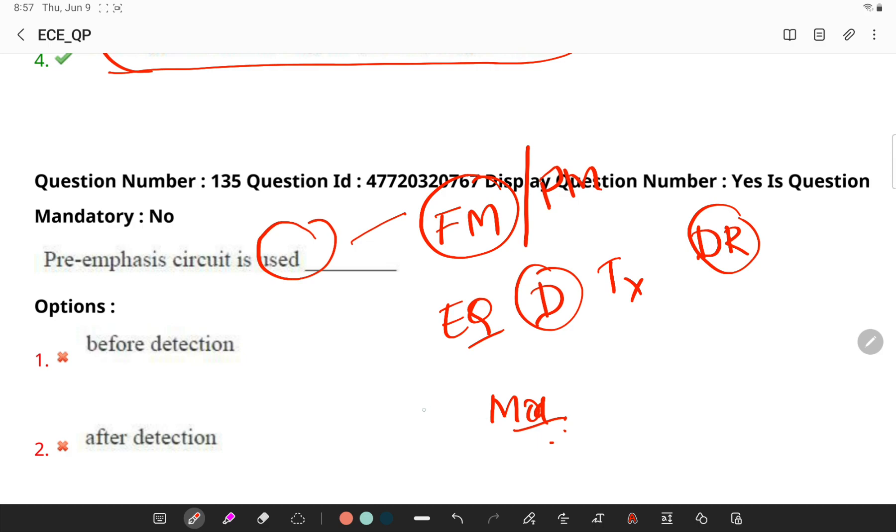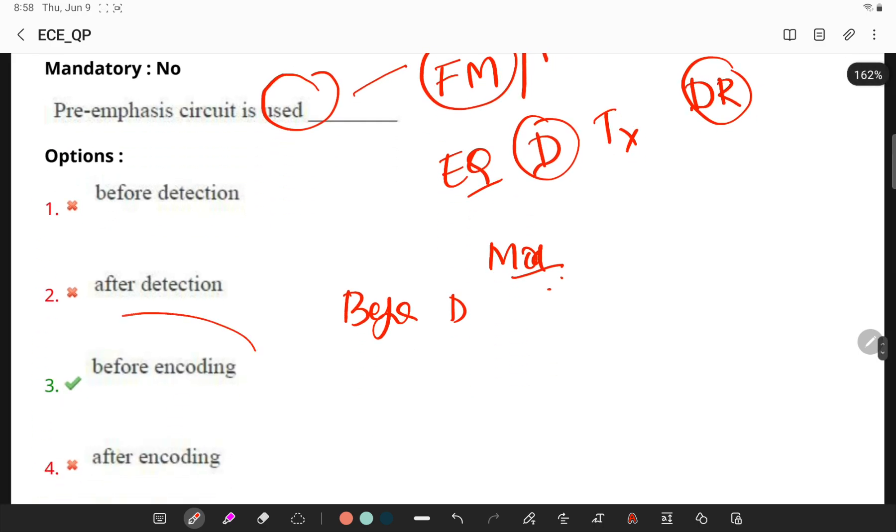It is done at the transmitter, and its circuit is used before modulation. So de-emphasis is used in a circuit before detection. So see the answer, it is before detection or before encoding stage.